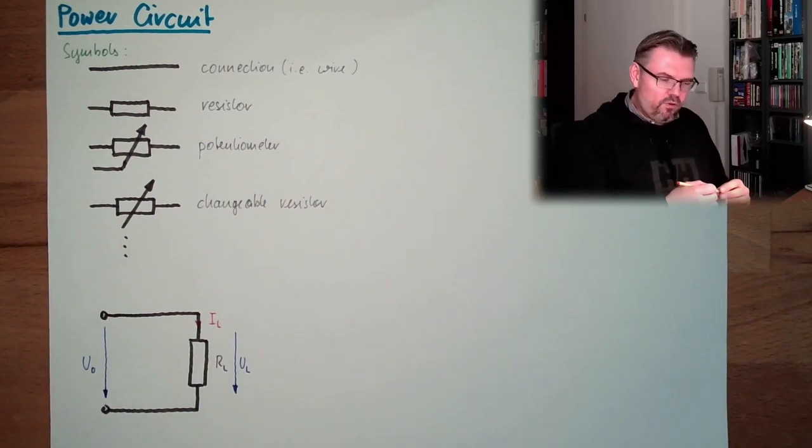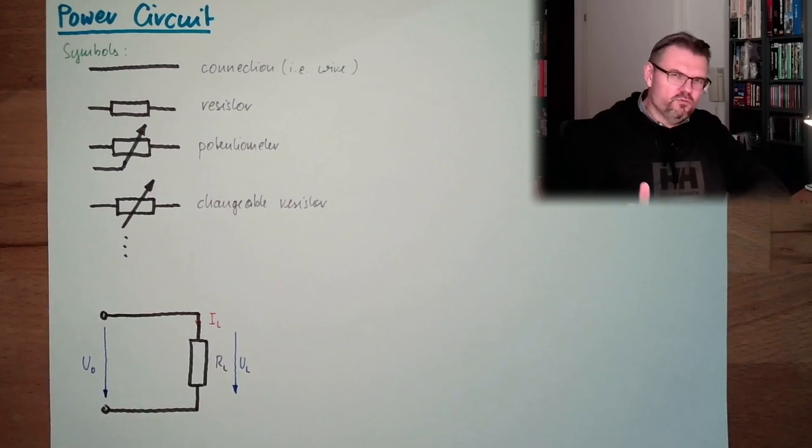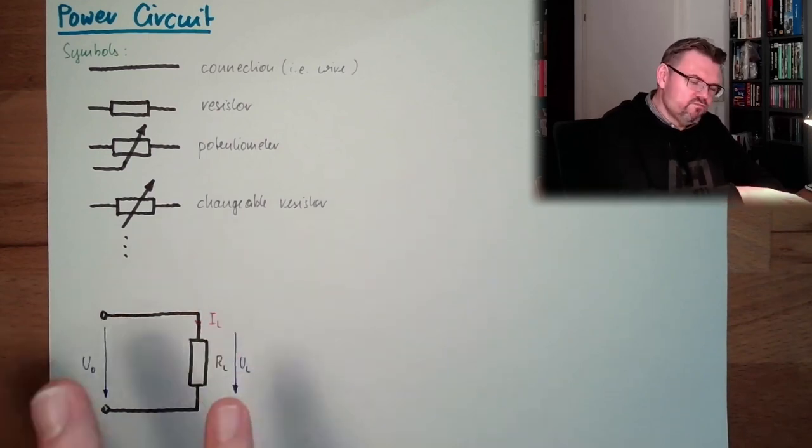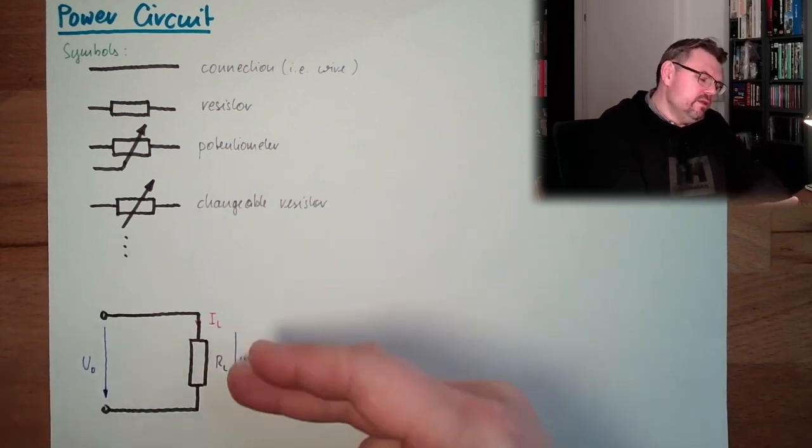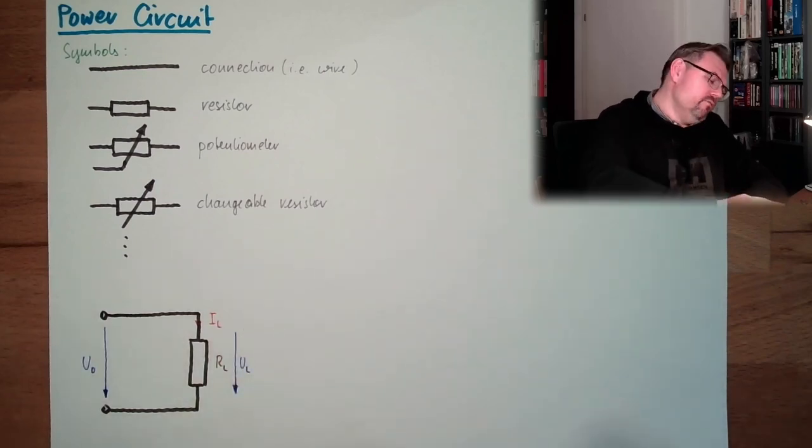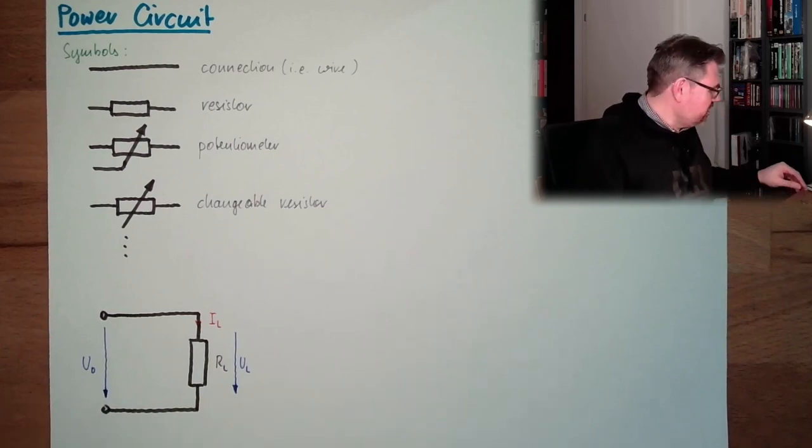Now I have simply drawn some arrows. And the arrows I have chosen, the direction of the arrows, does not really matter. I have chosen the arrows somehow, simply. And this somehow is called the reference direction. And if you calculate now a little bit at this power circuit, and a unit, for instance this voltage and so on, is maybe negative, then you know in reality it would be the other direction.